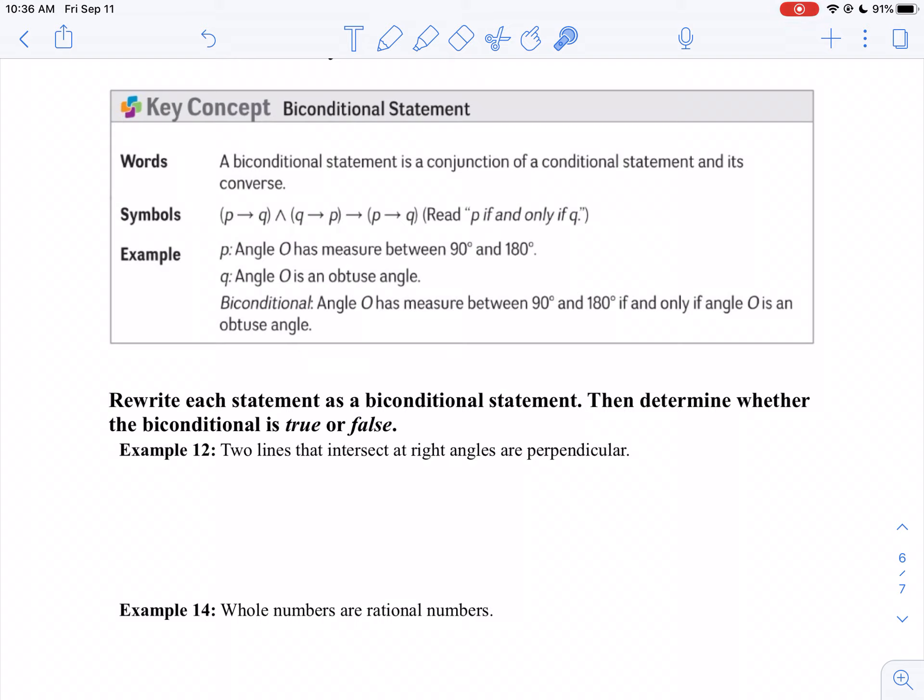Angle O is an obtuse angle. So the biconditional is angle O has a measure between 90 and 180 if and only if angle O is an obtuse angle.